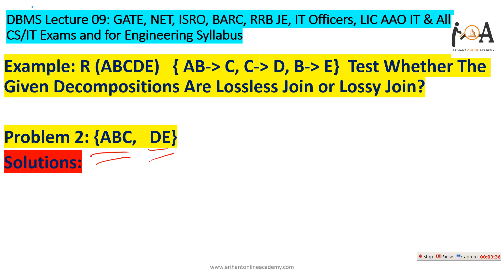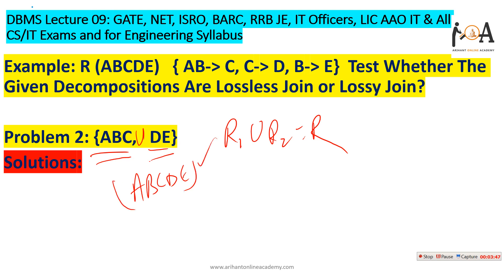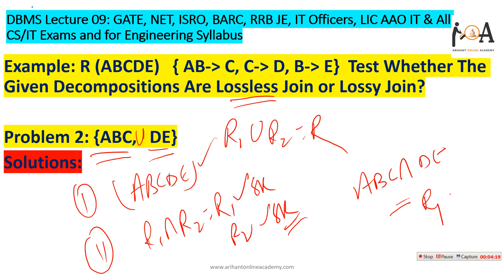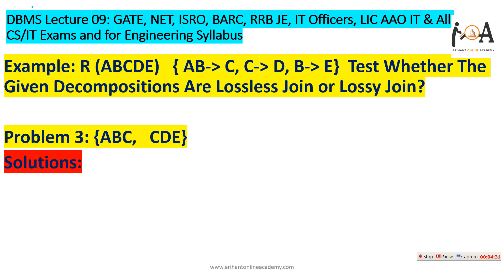In the next problem, the relation is R = {A, B, C, D, E} with decomposition R1={A,B,C} and R2={D,E}. The union of R1 and R2 gives {A,B,C,D,E}, satisfying condition one. However, intersecting R1 and R2 — {A,B,C} intersect {D,E} — gives nothing in common. Since we get neither R1 nor R2 as a super key, this is also a lossy join.